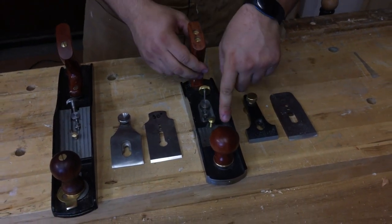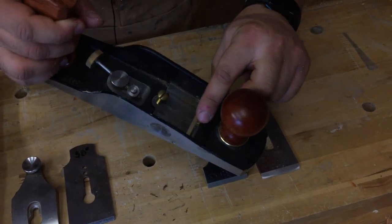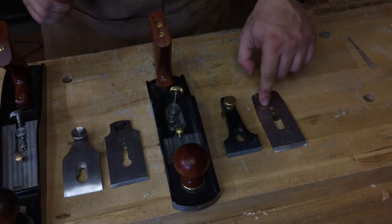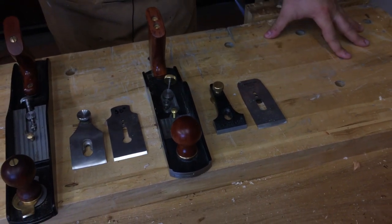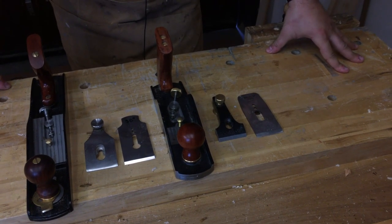One thing that is very good on the Veritas one is this little knob that avoids the throat to be pushed against the blade. And this is very helpful as it avoids damage to the blade.